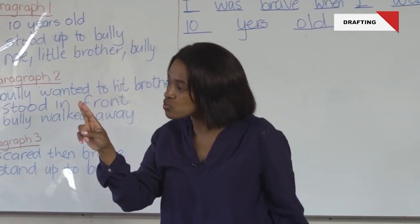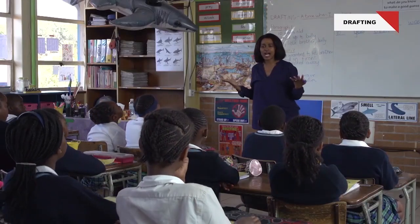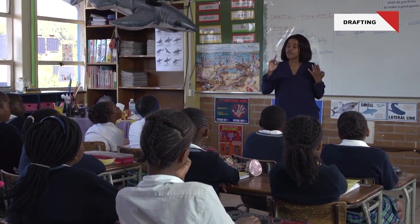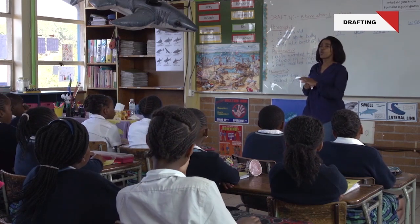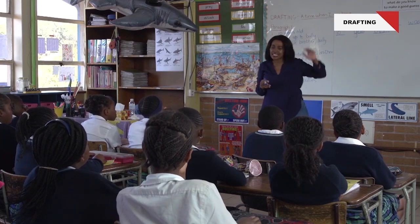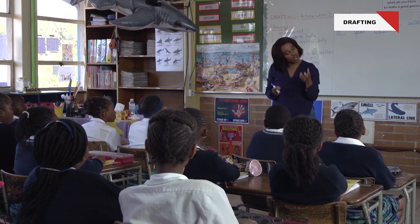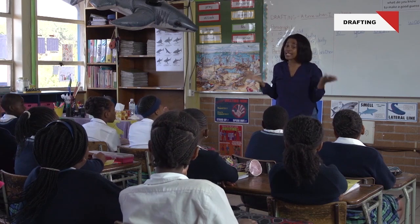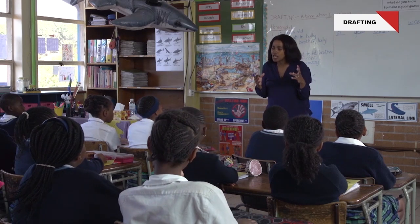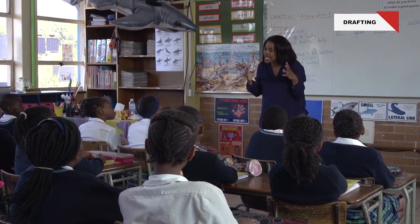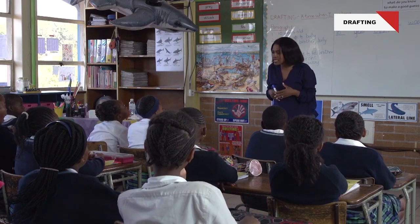What do I do when I cannot write a word? First of all, I can look at all the words that I have in the class — we can use the word wall at the back to help us. You can also use your personal dictionary to help you spell the word. If you cannot spell it at all, you do exactly what I did — say the word slowly and write the sounds that you can hear.